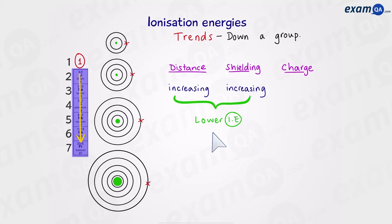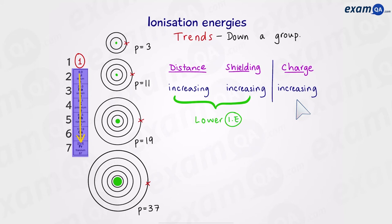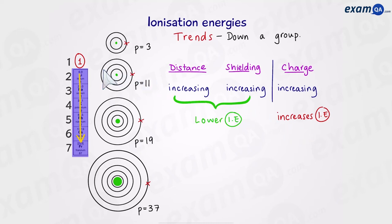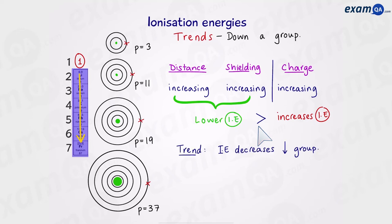However, there's still one more factor to consider, and that is charge. As we go down the group, the charge of the nucleus increases. We know that increasing charge increases the ionization energy, so now we're in a bit of a dilemma. On one side, distance and shielding increasing should make it easier to remove the electron. On the other side, increasing charge should make it harder. The answer is that distance and shielding outweigh the increase in charge in this case. So the trend is that ionization energy decreases as you go down the group.